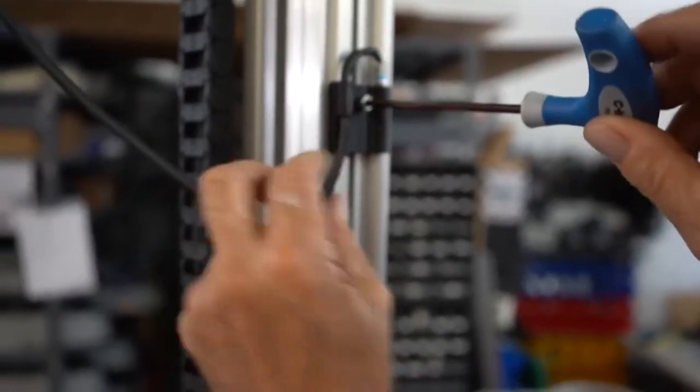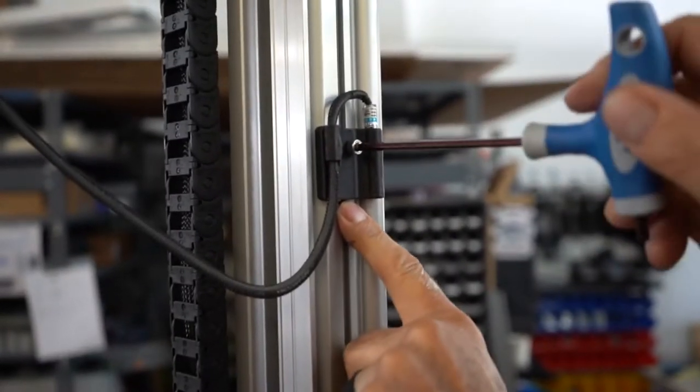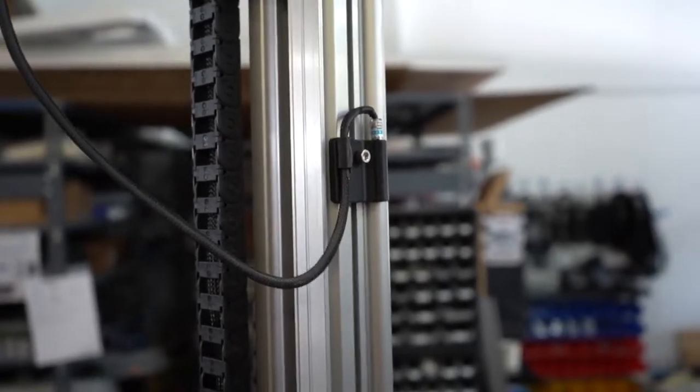For the default configuration, align the Z-probe switch with the mark on the side of the rail.